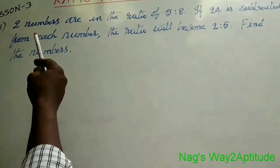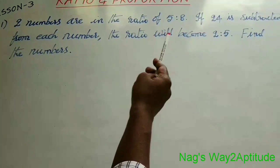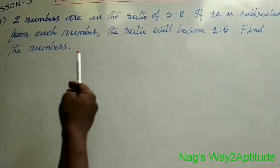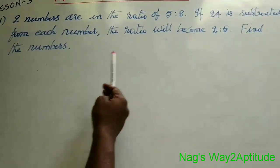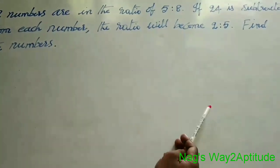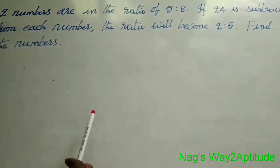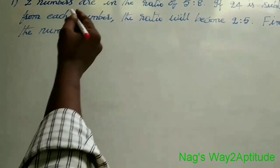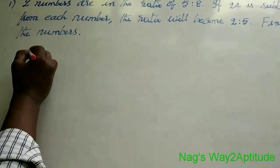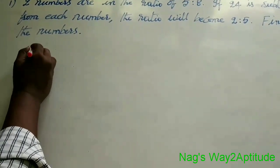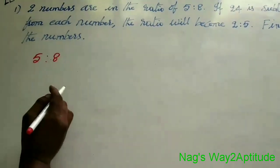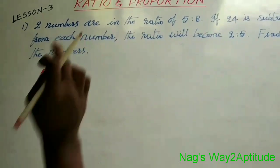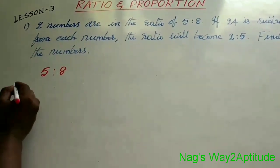Two numbers are in the ratio of 5 is to 8. If 24 is subtracted from each number, the ratio will become 2 is to 5. Find the numbers. Here friends, what is the ratio of the numbers? 5 is to 8. And from each number, 24 should be subtracted.